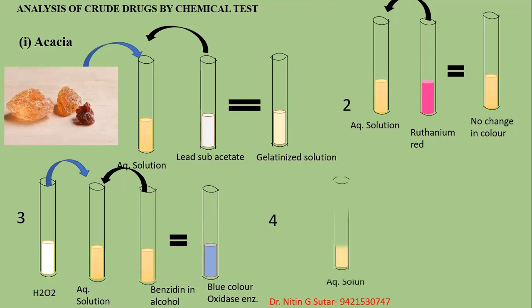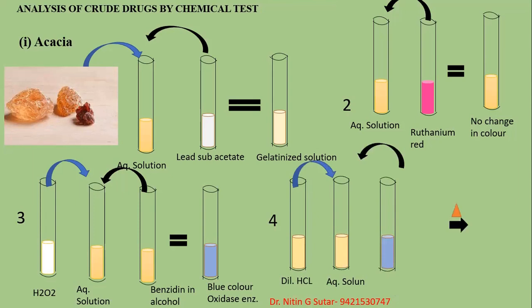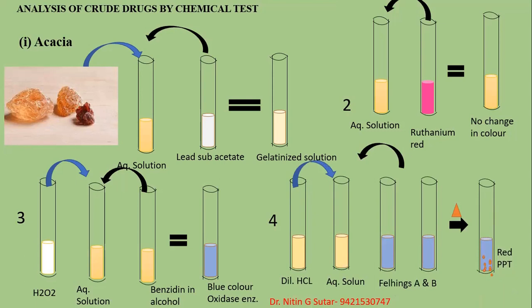The fourth test: take the aqueous solution of acacia, add dilute hydrochloric acid solution, and then add Fehling's solution A and B. Heat that particular mixture. After heating, you get a red color precipitate. That indicates that acacia is present.